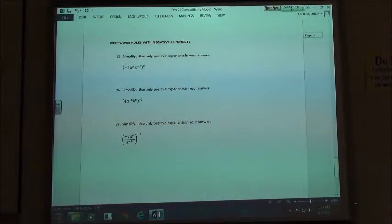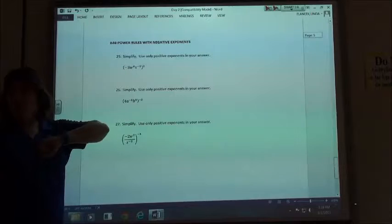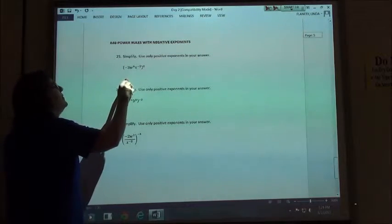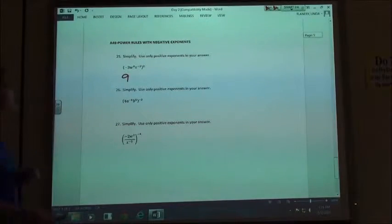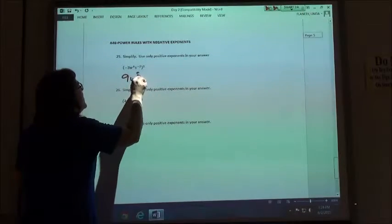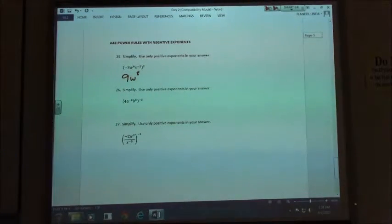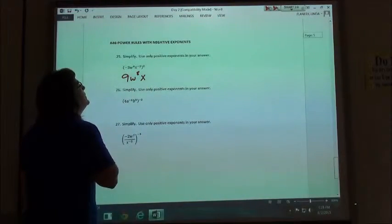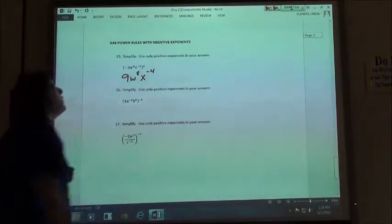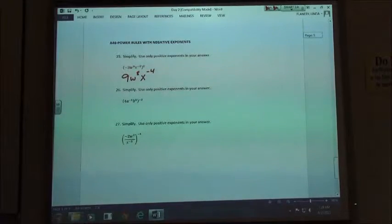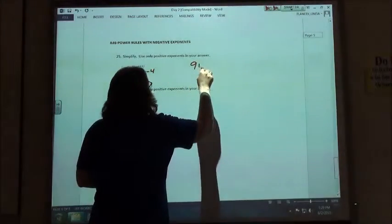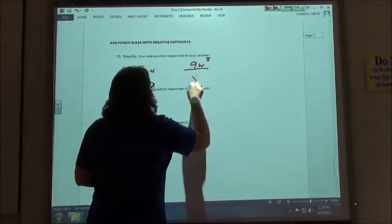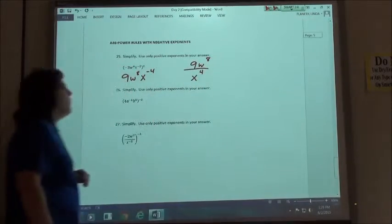Square it first? Okay, so if we square everything, negative 3 squared is 9. W to the 4th squared is W to the 8th, and x to the negative 2 squared would be x to the negative 4. And we've got to get rid of that negative exponent, so we'll flip that down to the bottom. So 9w to the 8th over x to the positive 4 would be my answer.